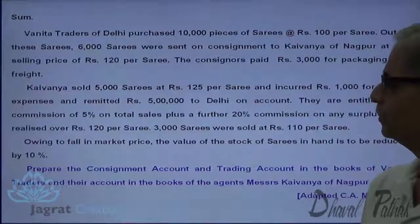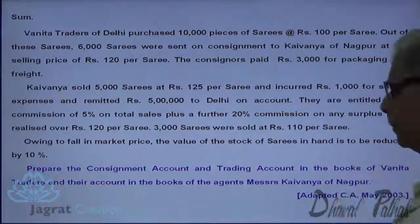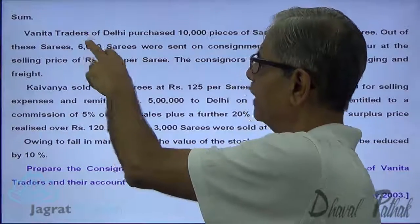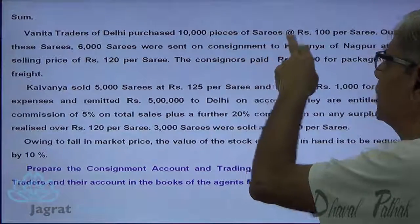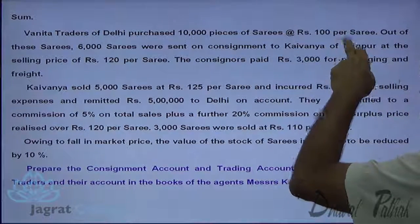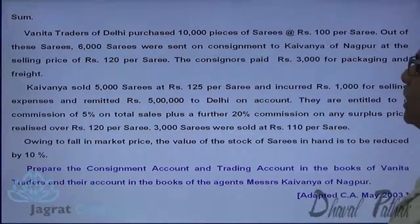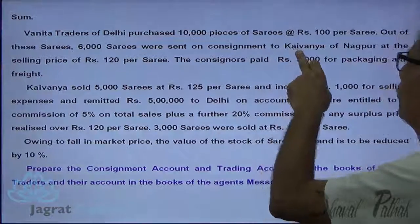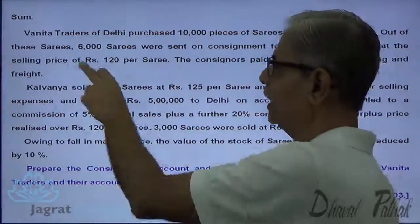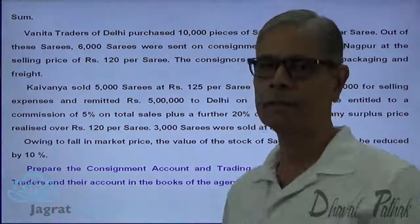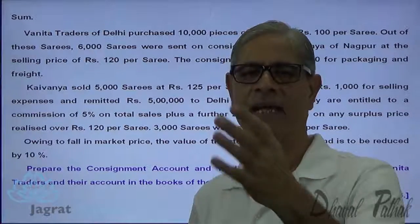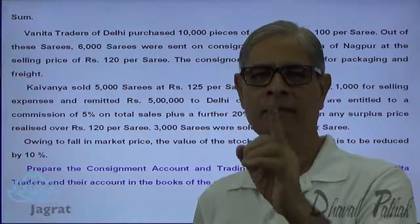Observe the sum on the screen, adapted from CA 2003. Bhanita Traders of Delhi purchased 10,000 pieces of sarees at the rate of ₹100 per saree. Out of these sarees, 6,000 sarees were sent on consignment to Kaivanya of Nagpur at a selling price of ₹120 per saree. So out of 10,000 units, 6,000 units are sent to the consignee for selling at a commission.